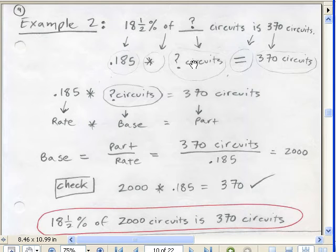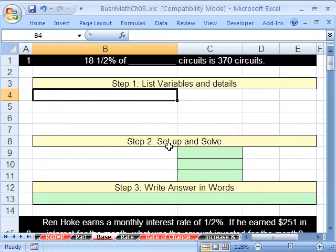That's some unknown amount of circuits. Percent times something equals something when we were studying this earlier. This is going to be the base. Is always means equal sign, and then this is the part.